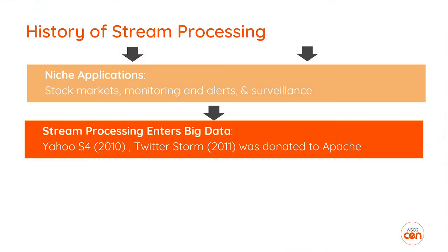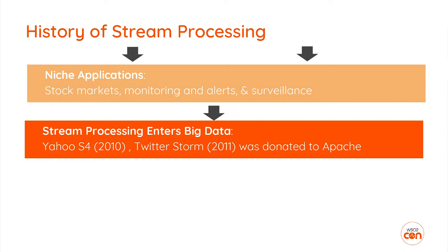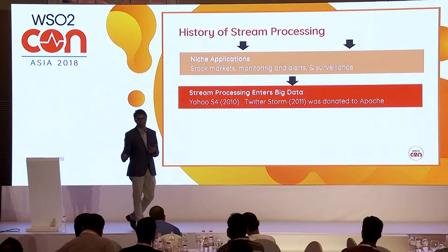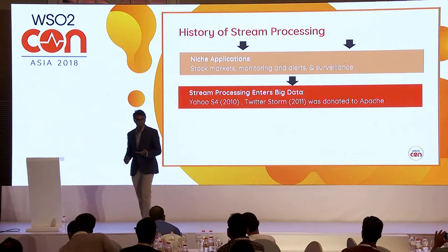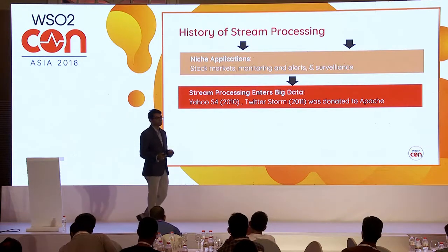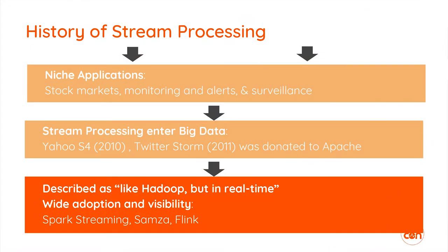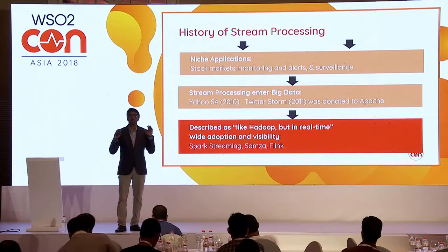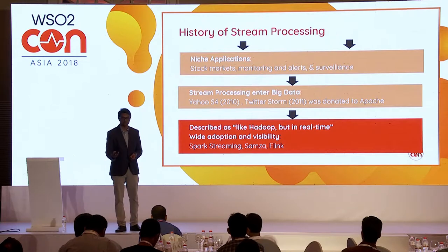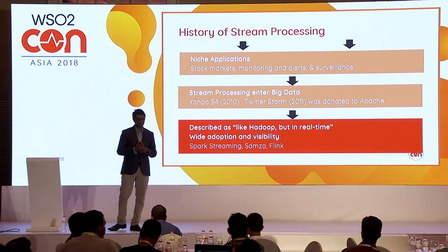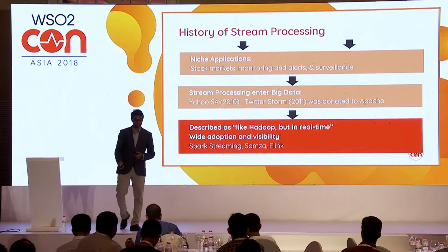After 2010, Yahoo introduced Yahoo S4 and then Twitter Storm, which were donated to Apache, and stream processing became a big data topic. In big data we have volume, velocity, and variety — these systems focused on the velocity side. Storm advertised itself as being like Hadoop but in real-time, doing map-reduce in real-time. Other stream processing systems also came by, like Spark Streaming, Samza, and Flink — you can find them as active projects in Apache today.